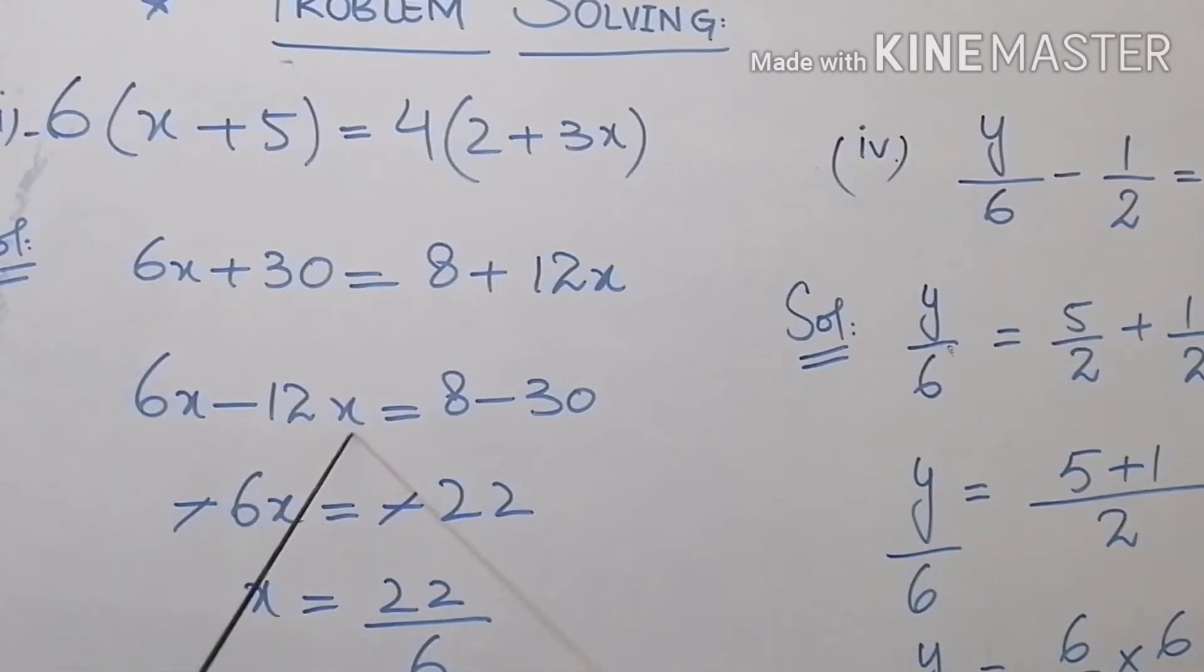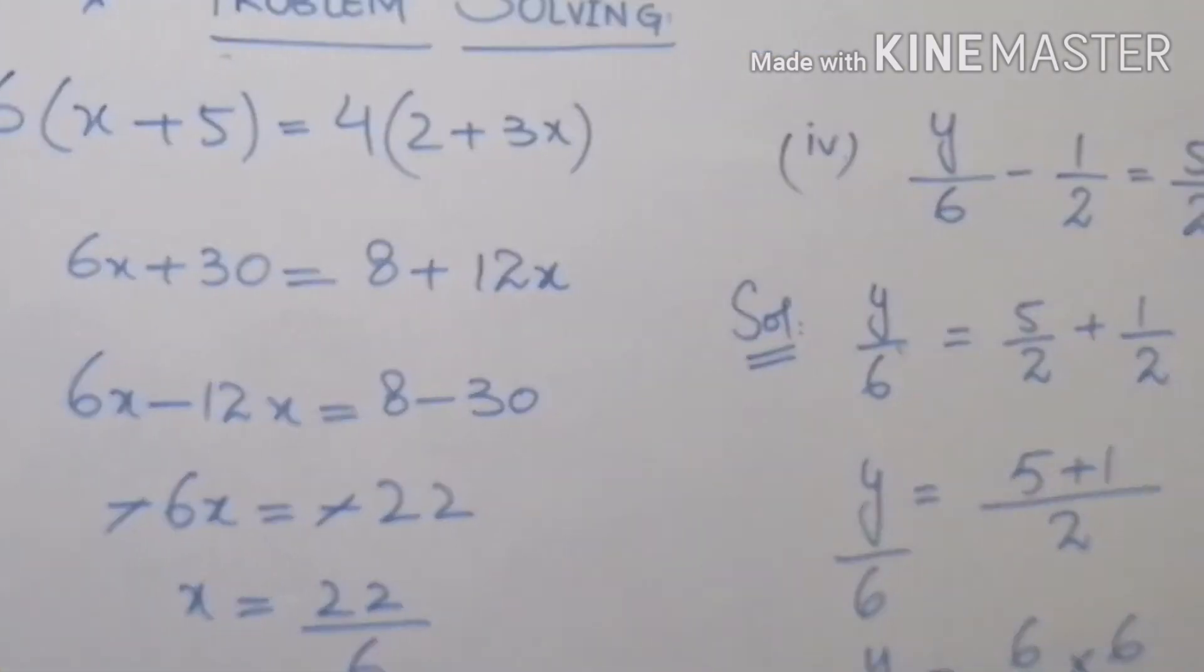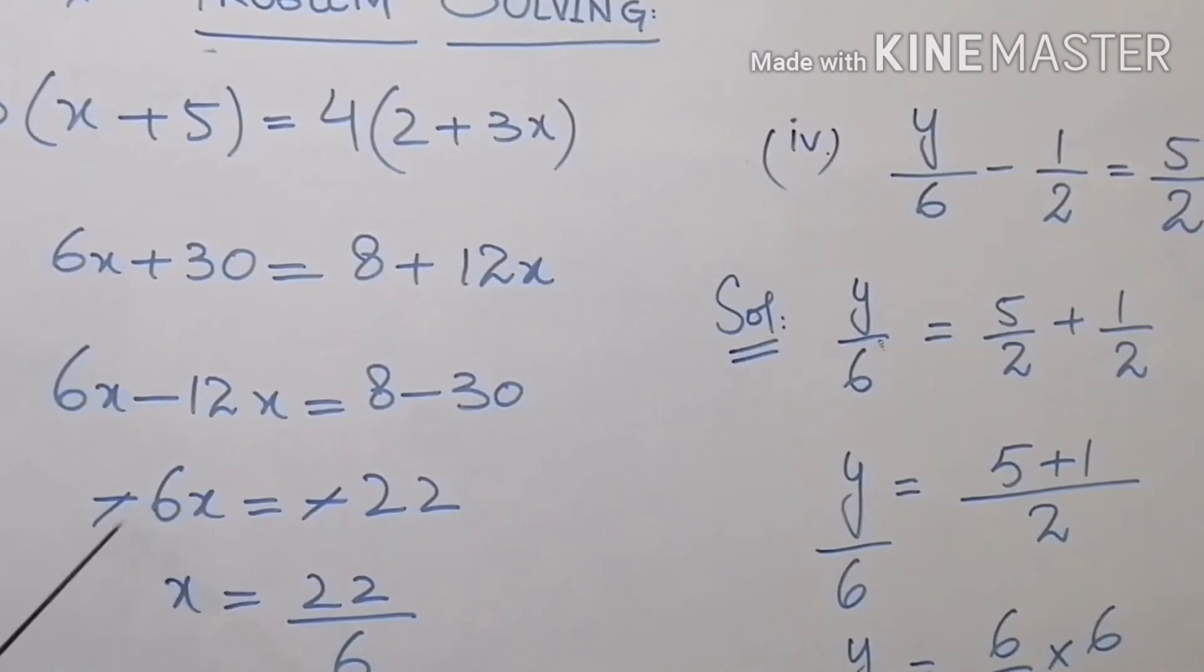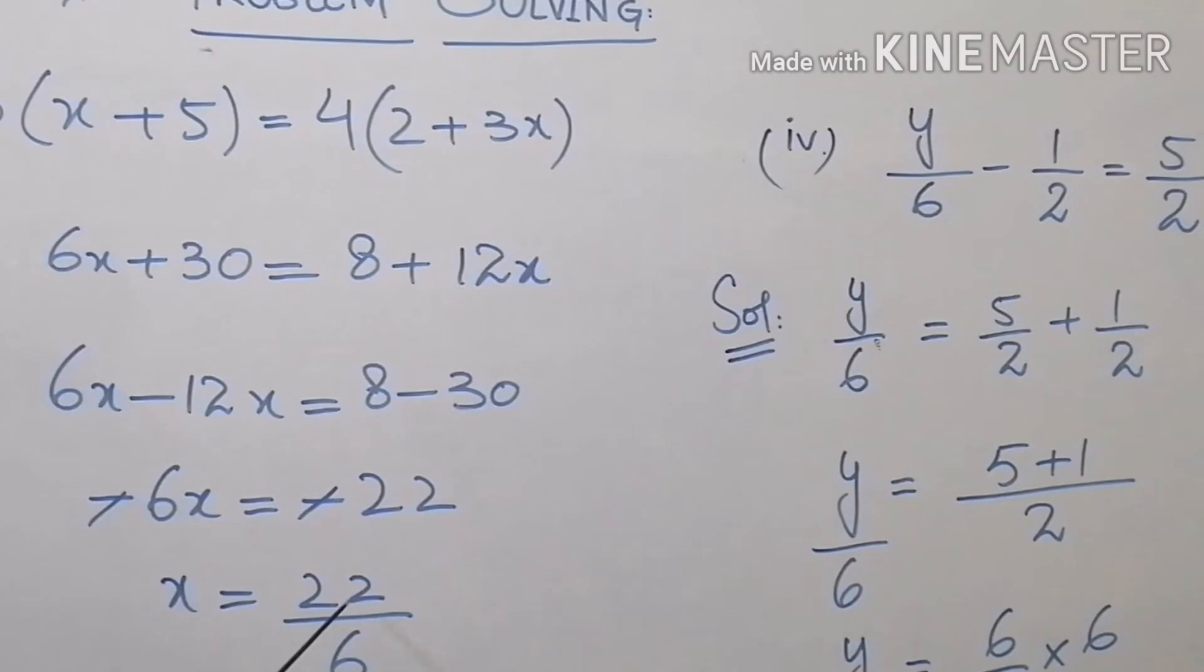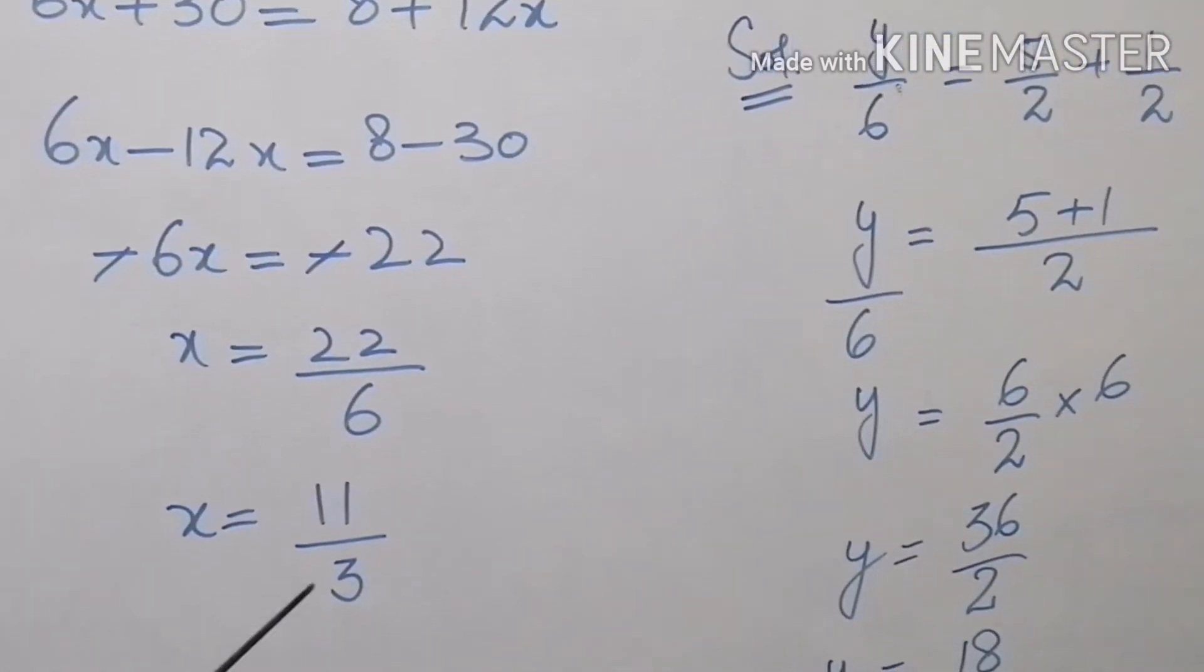So 6x minus 12x is equals to 6x, but the greater term sign is negative. Also, on the right hand side, 8 minus 30 is equals to 22, but the greater term sign is negative. So we are placing negative on both sides, minus sign. Both of these minus signs will be cancelled out and minus 6x is equals to minus 22. These signs will be cancelled out and the value of x will be 22 over 6. And when you divide these values, you will get x is equals to 11 over 3.